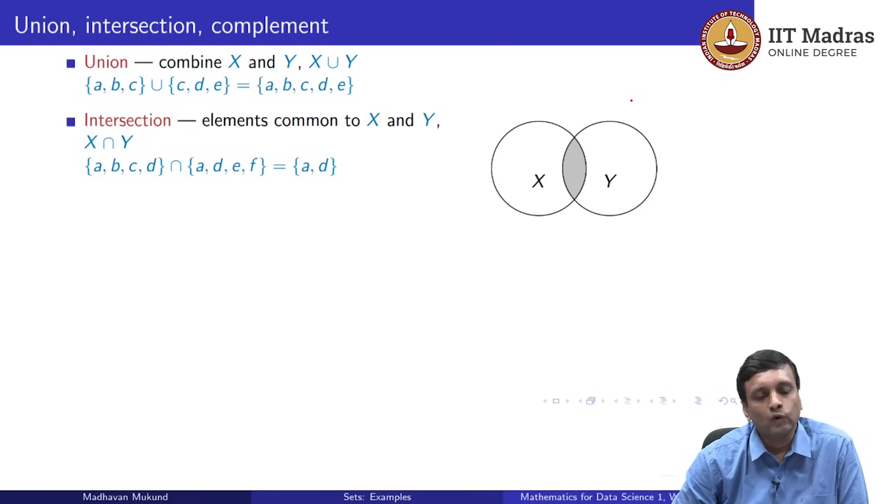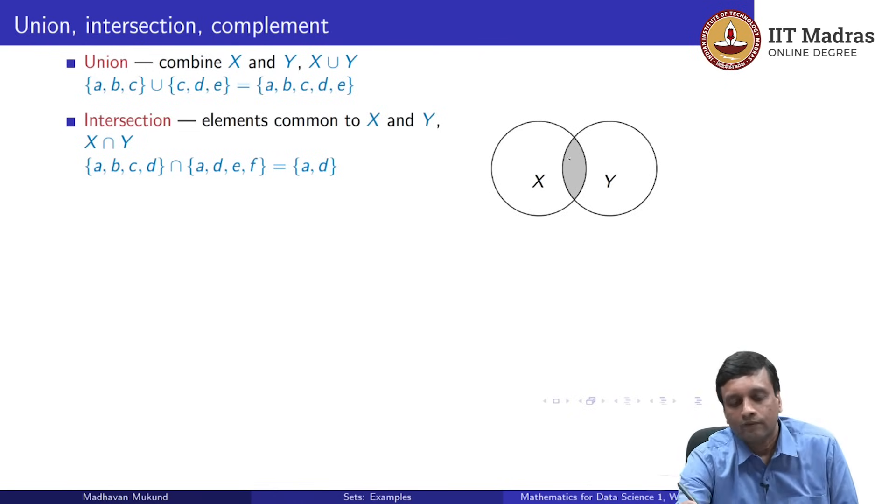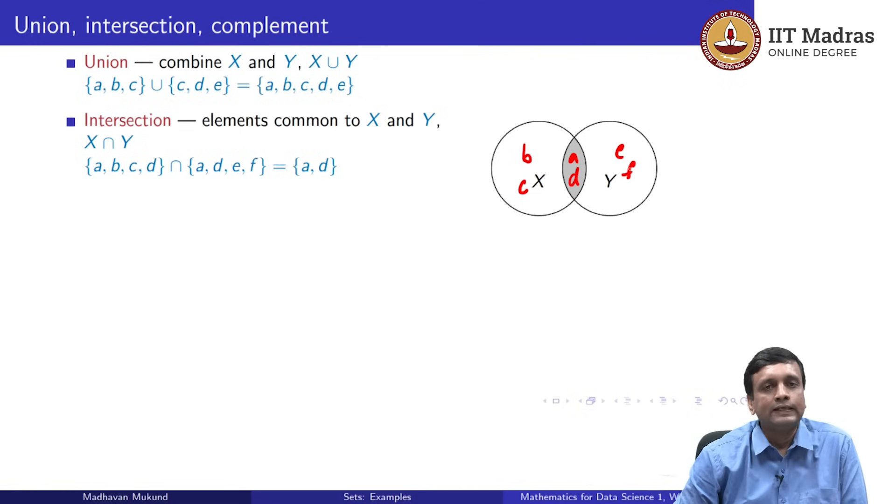Conversely, we can take only those things which are common to the two and in this case we have A and D over here and then we know that B and C are only on the left and E and F are only on the right. The intersection tells us the elements which are common to the two sets.